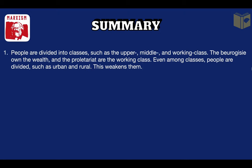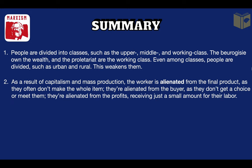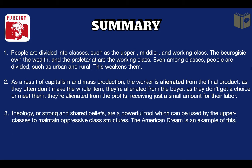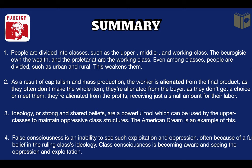So that's Marx in a nutshell. To sum up: people are divided into classes such as the upper, middle, and working classes — the bourgeoisie hold wealth and the proletariat are the working class. Even among classes, particularly in the proletariat, people are still divided — such as urban and rural, agricultural and industrial — and this weakens them. As a result of capitalism and mass production, the worker is alienated from the final product, from the buyers, and from the profits, receiving just a small amount for their labor. Ideology or strong shared beliefs are a powerful tool used by the upper classes to maintain oppressive class structures — the American dream is one example. Finally, false consciousness is an inability to see such exploitation and oppression, often becoming a tool used by the ruling classes. Class consciousness is becoming aware and seeing oppression and exploitation.